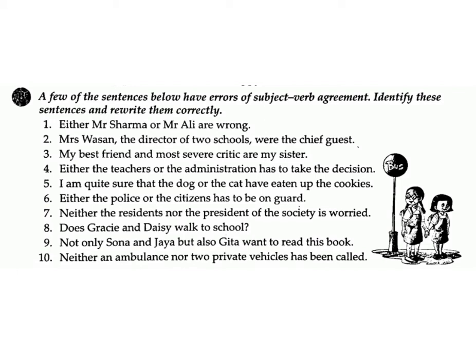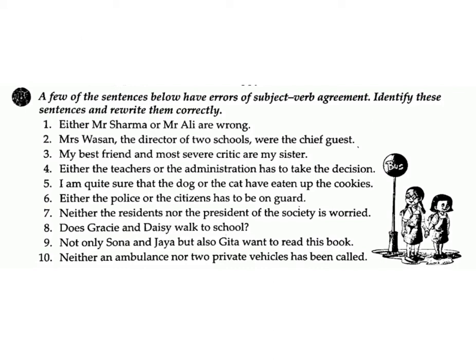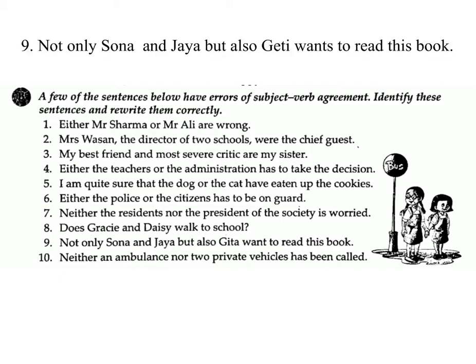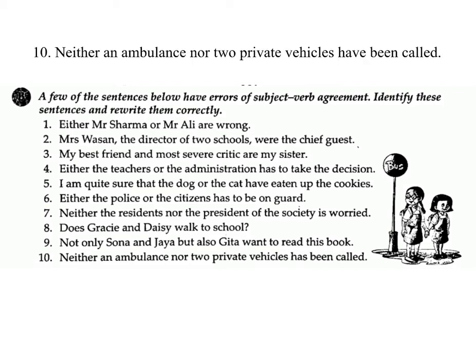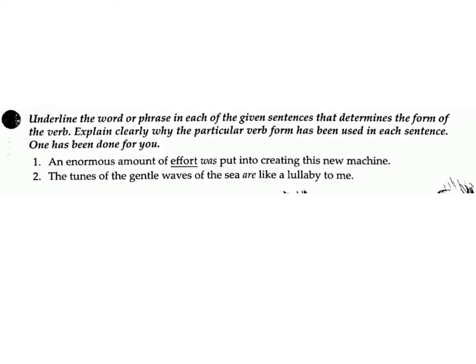8. Does Gracie and Daisy walk to school? Answer: Do Gracie and Daisy walk to school? 9. Not only Sona and Jaya but also Gita want to read this book. Answer: Not only Sona and Jaya but also Gita wants to read this book. 10. Neither an ambulance nor two private vehicles has been called. Answer: Neither an ambulance nor two private vehicles have been called.